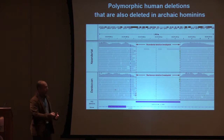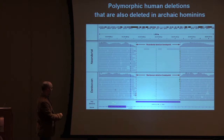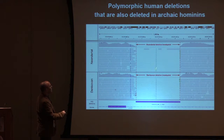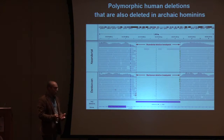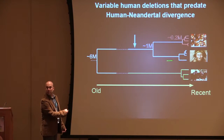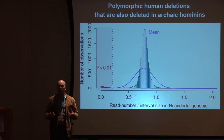We can take a chromosomal location with a polymorphic deletion already reported in humans, align Neanderthal and Denisovan next-generation sequencing reads onto the human reference genome, and observe a missing gap indicating that Neanderthal and Denisovan genomes also carry that deletion. We are suddenly looking at variation that is polymorphic in humans and shared with the Neanderthal lineage.